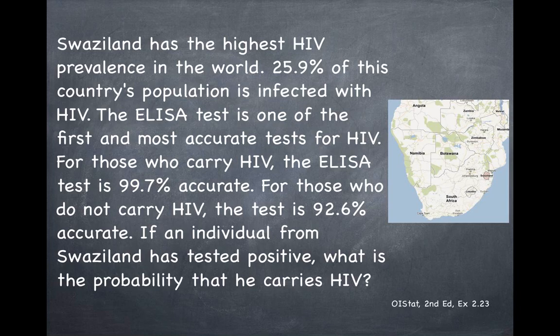Swaziland happens to be the country that has the highest HIV prevalence in the world. According to 2012 estimates, 25.9% of this country's population is infected with HIV. The ELISA test is one of the first and most accurate tests for HIV. For those who carry HIV, the ELISA test is 99.7% accurate, and for those who do not carry HIV, the test is only 92.6% accurate. If an individual from Swaziland has tested positive, what is the probability that he carries HIV?